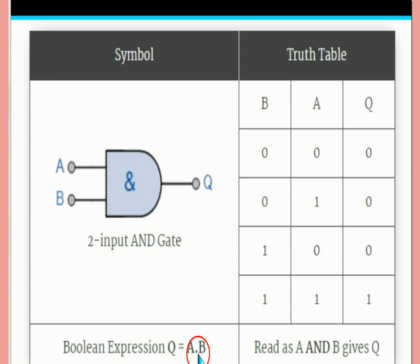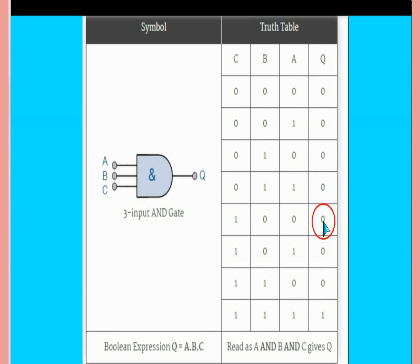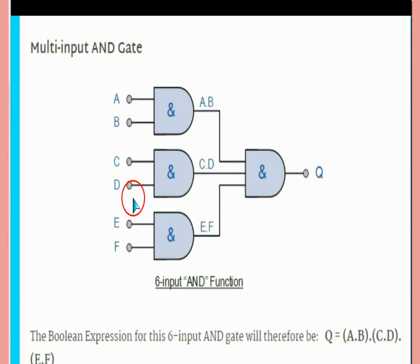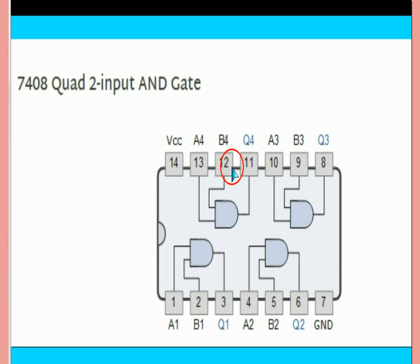A·B is not multiplication — you read it as A AND B. For three inputs: A and B and C, it gives 1 only when all inputs are 1; otherwise, if any input is 0, the output will be 0. The AND gate IC contains four AND gates, each with 2 inputs and 1 output. The Boolean expression for the IC is: (A·B)·(C·D)·(E·F), representing AND operations between pairs of inputs.